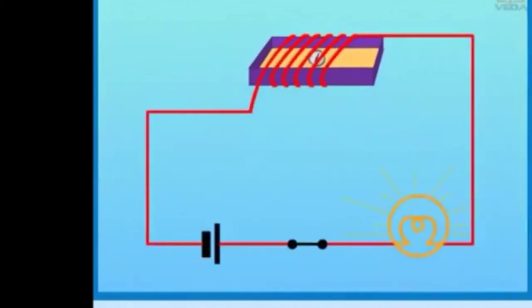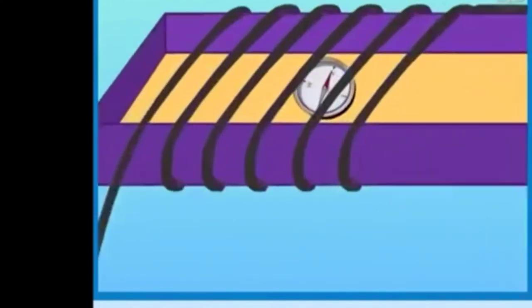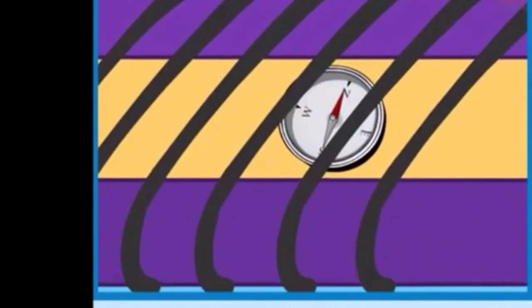That is, the compass needle gets deflected due to the magnetic field induced by the current. Now turn the switch to off position and note the direction of the compass needle. Now the compass needle comes back to the original position.